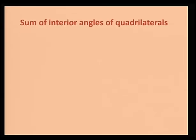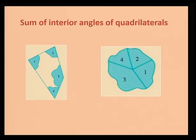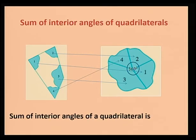Now, let's move on to the sum of interior angles of quadrilaterals. Have a look at this quadrilateral. If we cut the four angles and place them next to each other, we are going to have a complete turn. The four angles make one complete turn, which is 360 degrees. So, angle 1 + angle 2 + angle 3 + angle 4 = 360°. The sum of interior angles of a quadrilateral is 360 degrees.